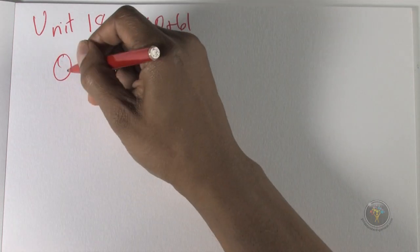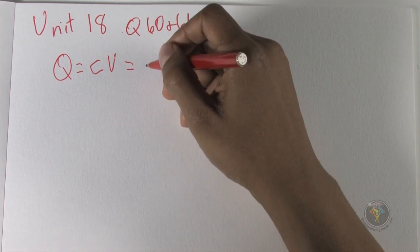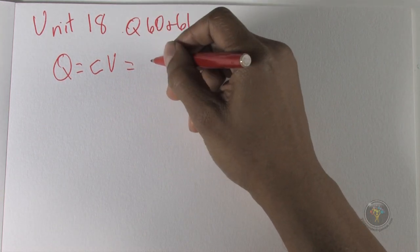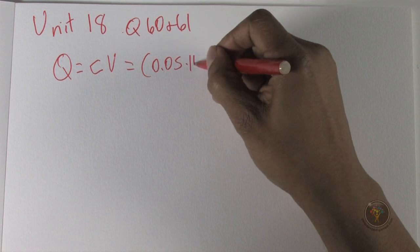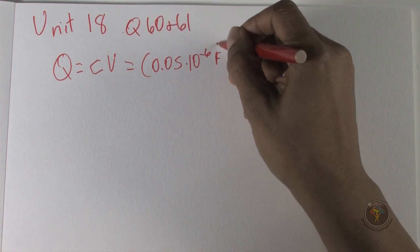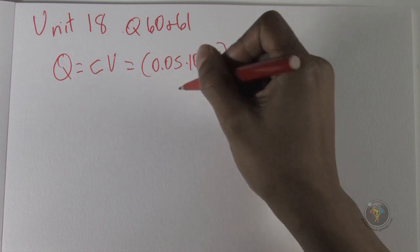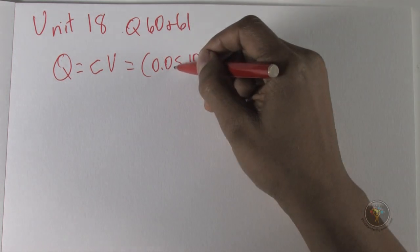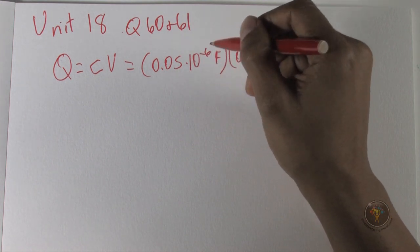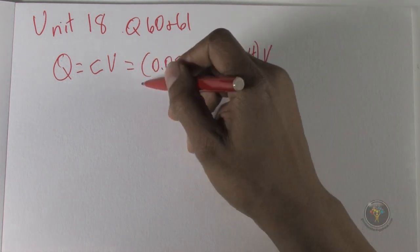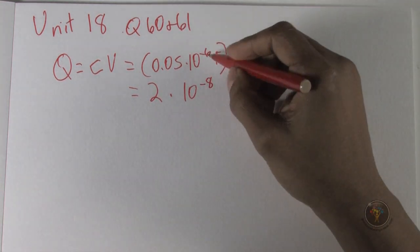So we use Q equals CV. And so we have, the charge on the capacitor is 0.05 times 10 to the minus 6 farads, so it's microfarads, times 0.4 volts. And that's 5 times 10 to the minus 8 times 0.4, so that's going to be 2 times 10 to the minus 8.